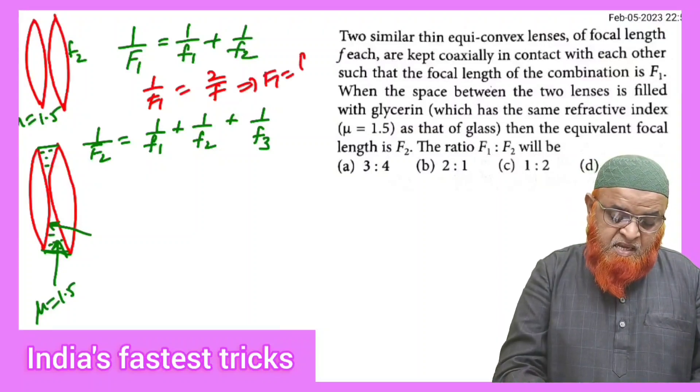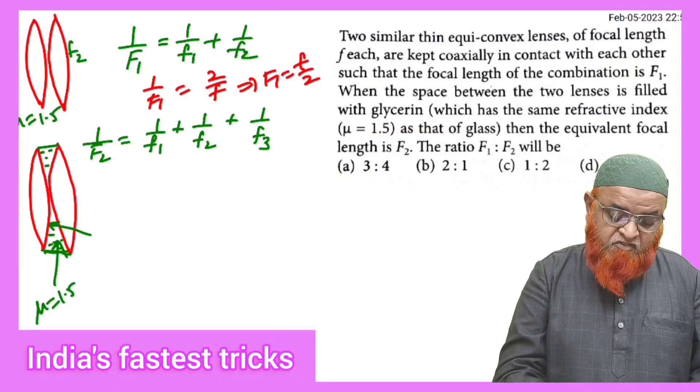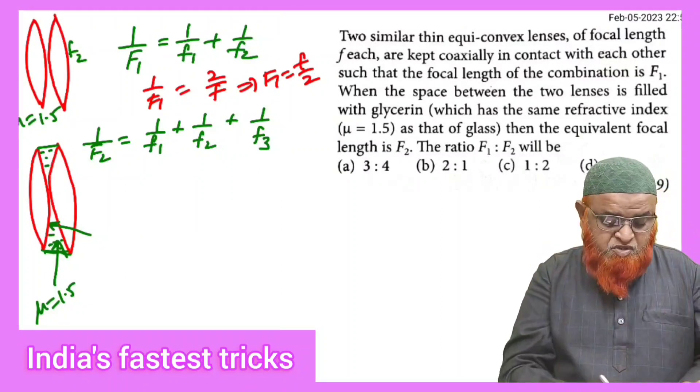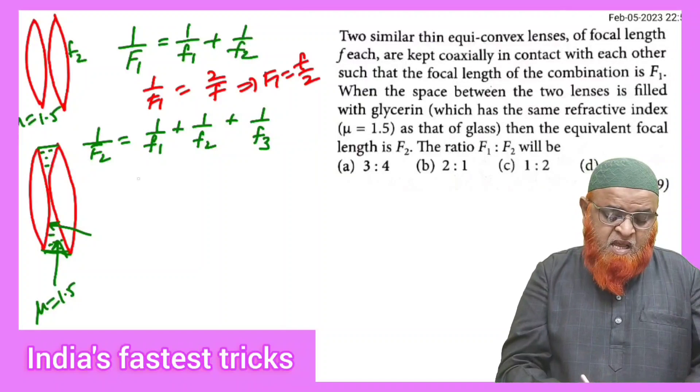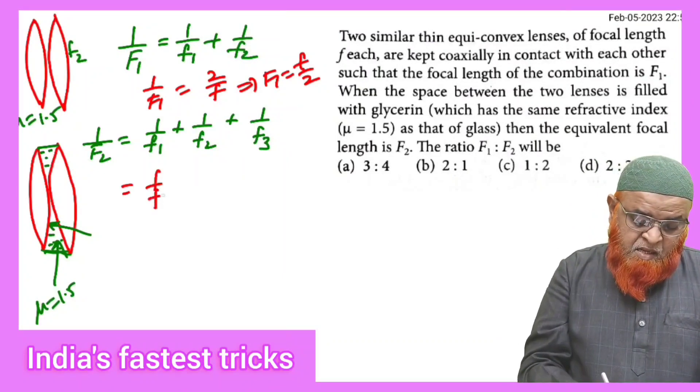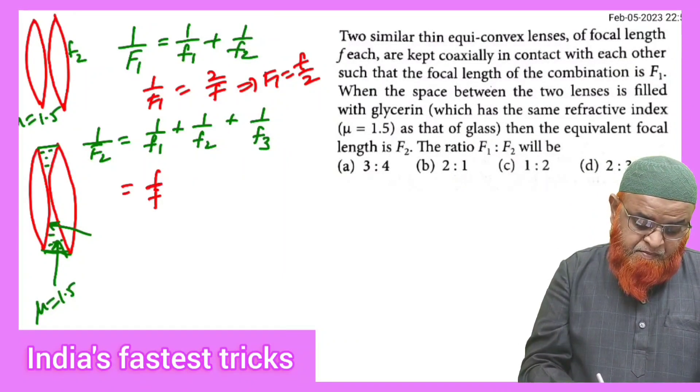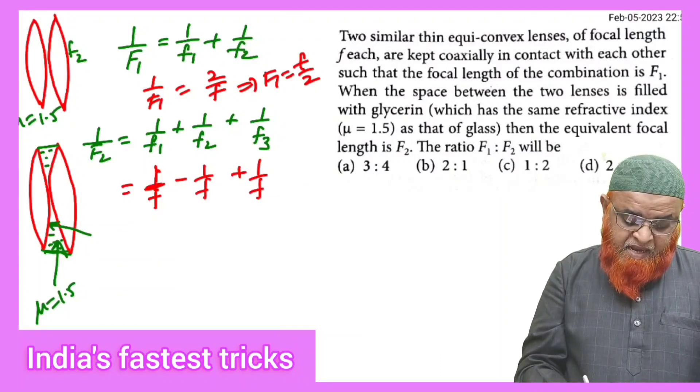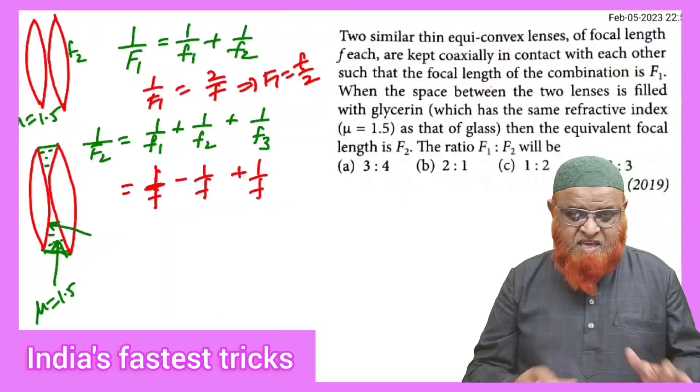But in the second case, glycerin has a concave shape. In between the two lenses we can consider this as 1/F2 = 1/f - 1/f + 1/f. The focal lengths are the same, but in the middle there is a concave lens which is taken as focal length negative.